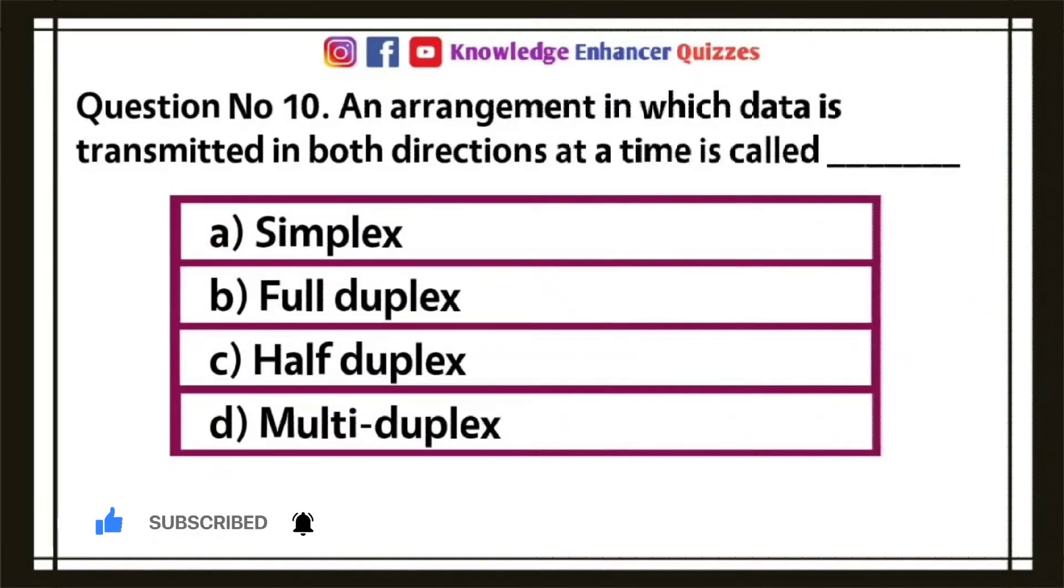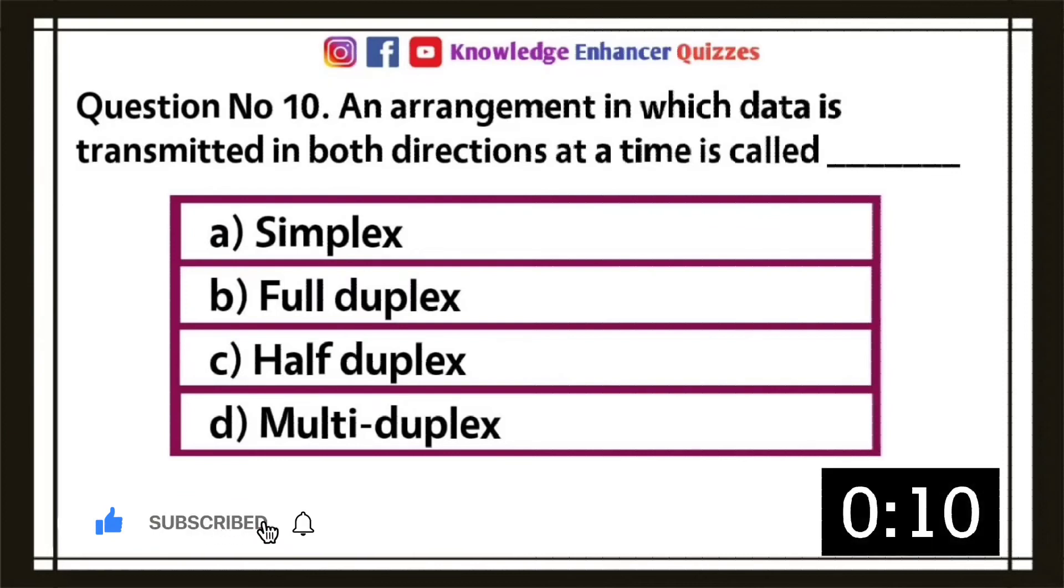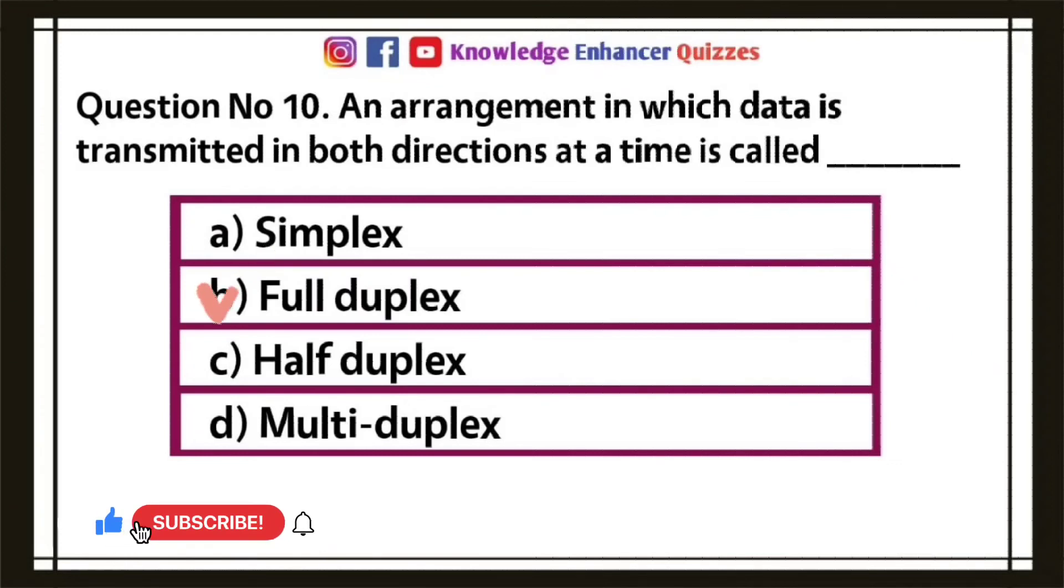Question number 10, an arrangement in which data is transmitted in both directions at a time is called: A, simplex; B, full duplex; C, half duplex; D, multi duplex. Option B is the right answer.